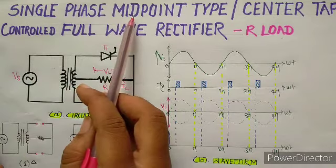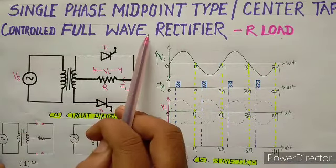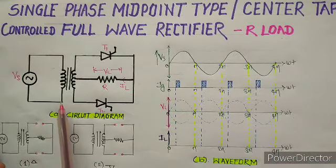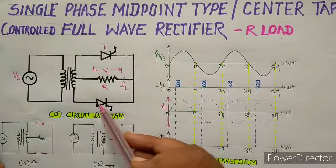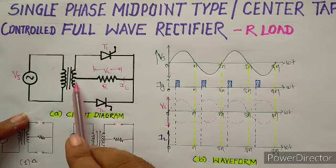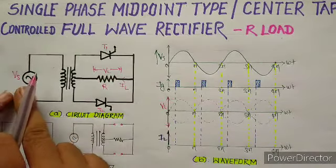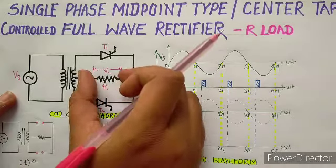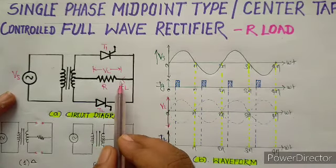Single phase midpoint type controlled full wave rectifier — इसे center tap controlled full wave rectifier भी कहते हैं। इसमें हम पहले resistive load के लिए देखेंगे। The figure shows the circuit diagram of this rectifier. Since it is a controlled rectifier, we use thyristors T1 and T2. इसमें एक center tap transformer लगेगा जिसकी secondary side center tap होगी। Input voltage को VS से denote किया है। Load resistive है, load के across voltage को load voltage और load में से जाने वाले current को load current कहेंगे।